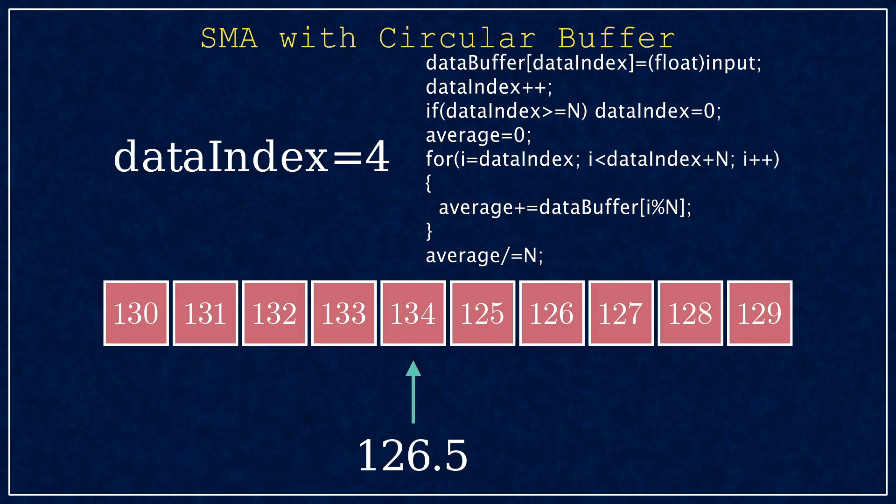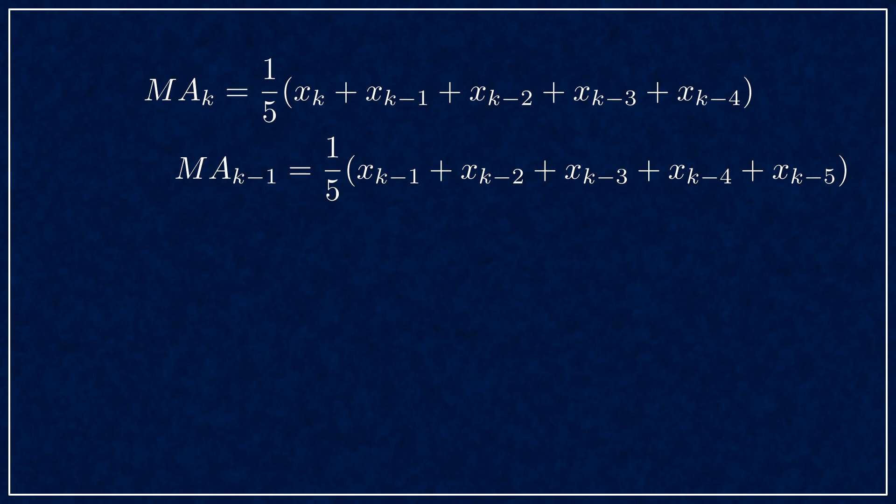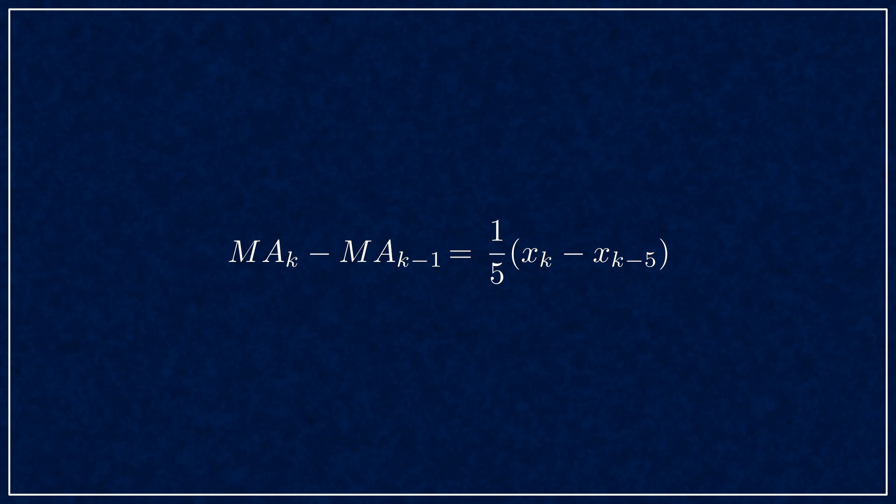Circular buffers will work well with more advanced weighted average filters, but for a simple moving average there's one more improvement. Let's look at the averaging formula for the current step and the previous for a 5-tap filter. You can collapse these two by subtracting, getting the difference between steps. Rearranging gives you this update rule that eliminates the looping entirely.